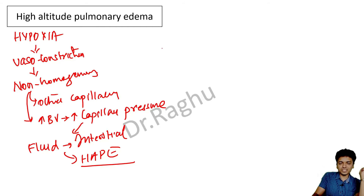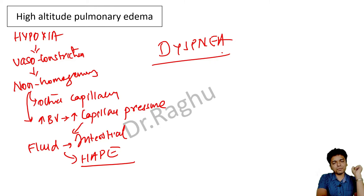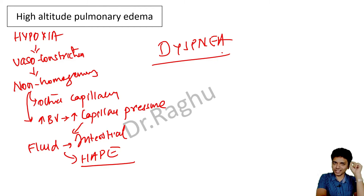Because of HAPE, the patient gets dyspnea — difficulty in breathing. Acute mountain sickness has two important components: acute cerebral edema and high altitude pulmonary edema, and I've explained the pathophysiology behind both.